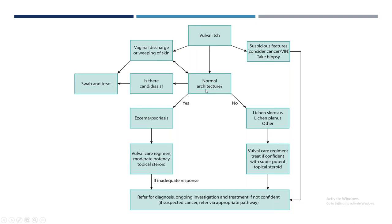If the normal architecture is preserved, first consider candidiasis — treat if present. If anatomy is preserved with only lesions, think of eczema, such as contact dermatitis, atopic dermatitis, or allergic dermatitis, or psoriasis. When the anatomy is not preserved — meaning there is fissuring, scarring — think of either lichen sclerosis or lichen planus. See here the anatomy of the vulva is not preserved, with burial of the clitoral hood.